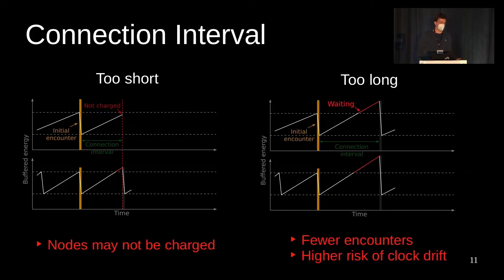With a long connection interval, on the other hand, devices spend a lot of time waiting and have fewer encounters over time, and it also increases the risk that the clocks of the two devices have drifted apart too far.